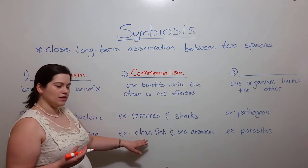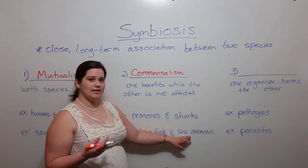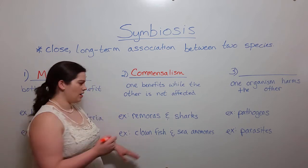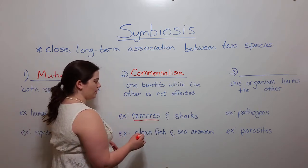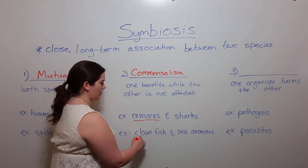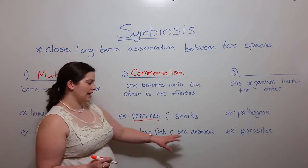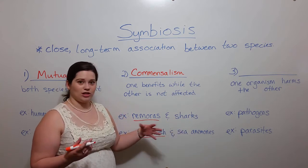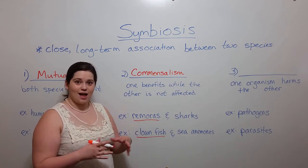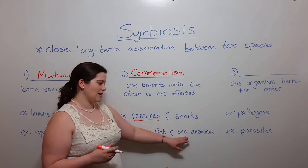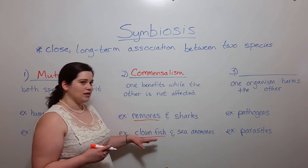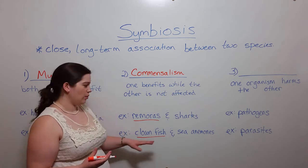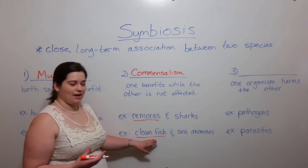Another example of commensalism is clownfish and sea anemones. The clownfish are the ones that benefit here. The clownfish will live in a close association with the sea anemones, meaning they actually can live sort of inside among the tentacles of the sea anemones, and this gives them a place to live and a way to protect themselves from predators that would otherwise be able to attack them.